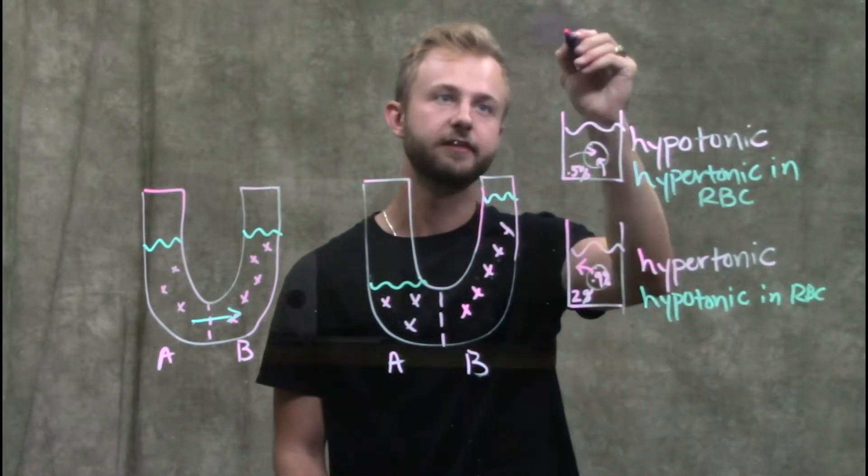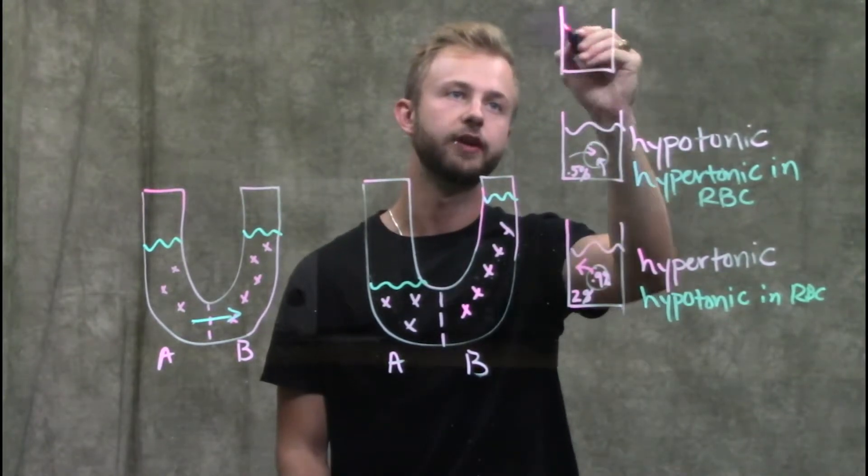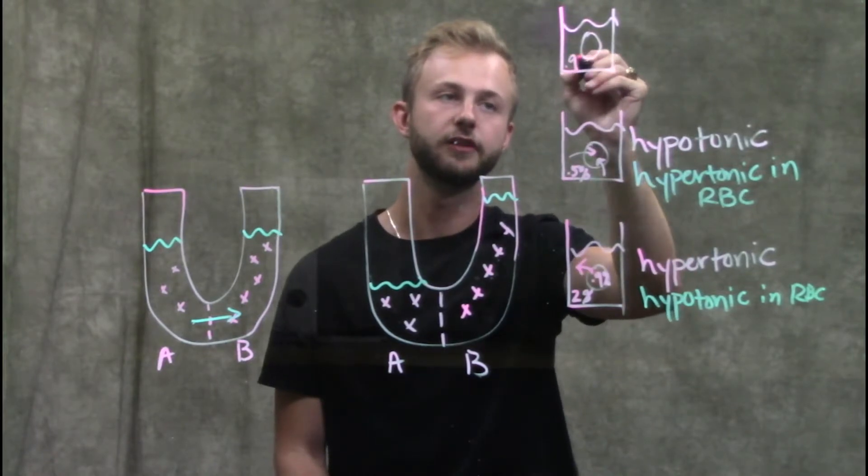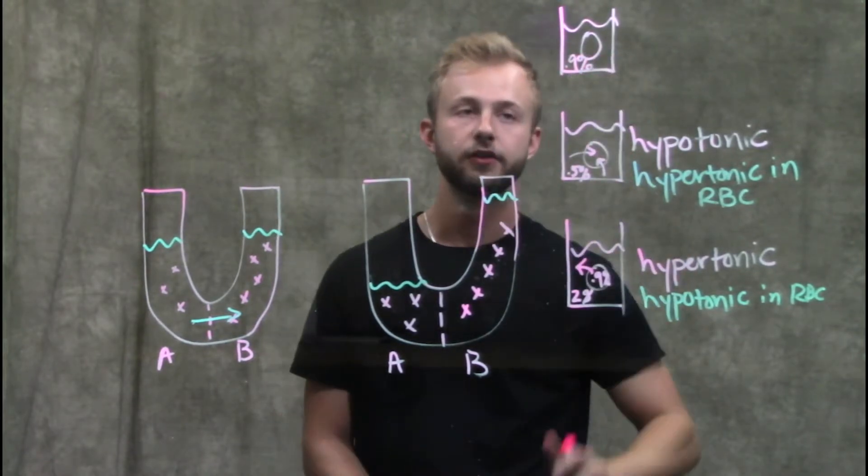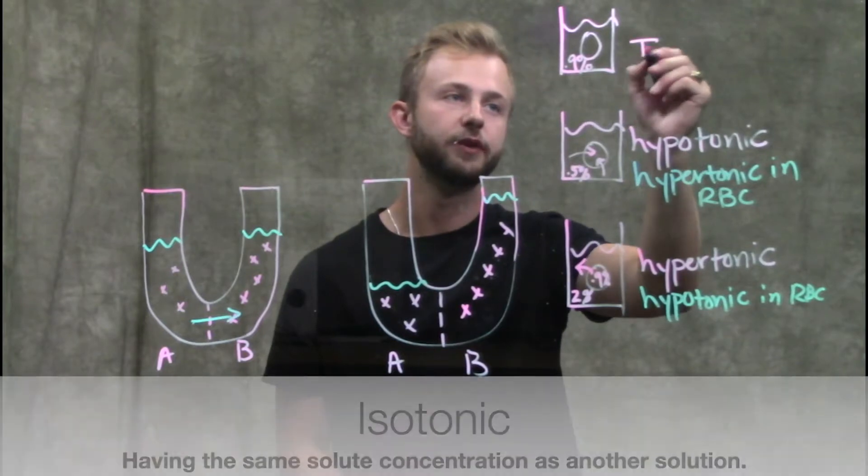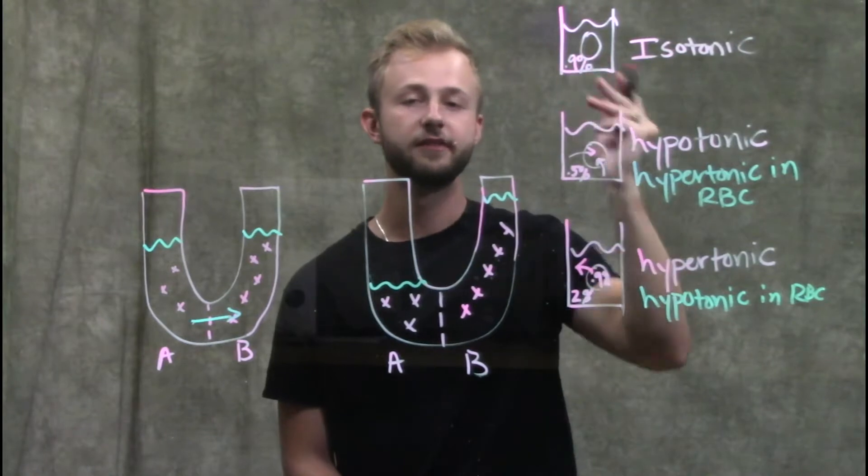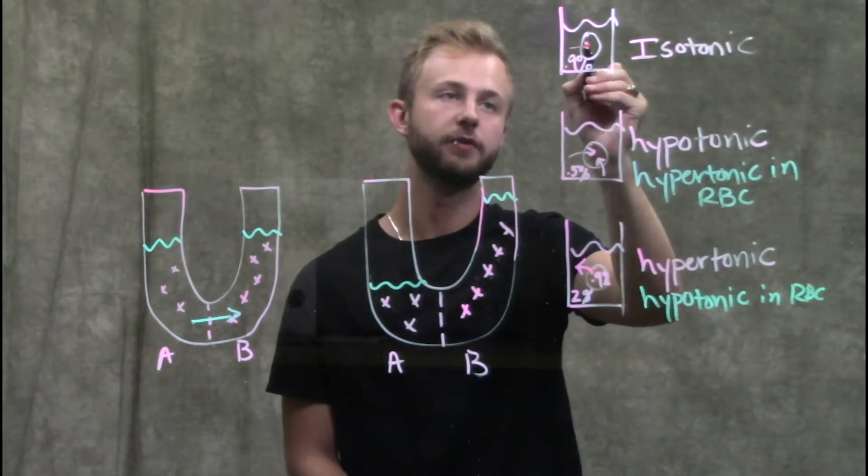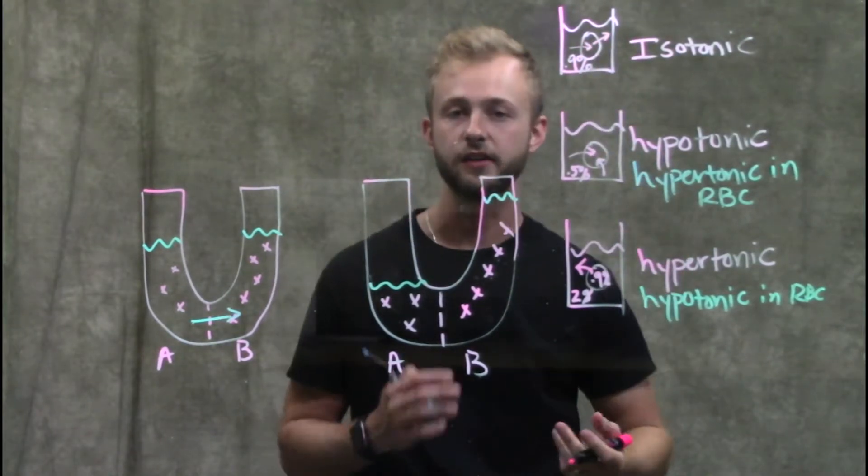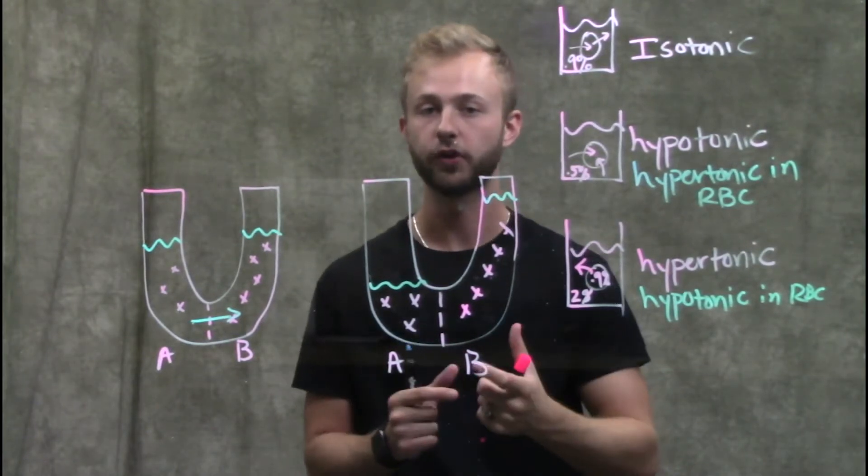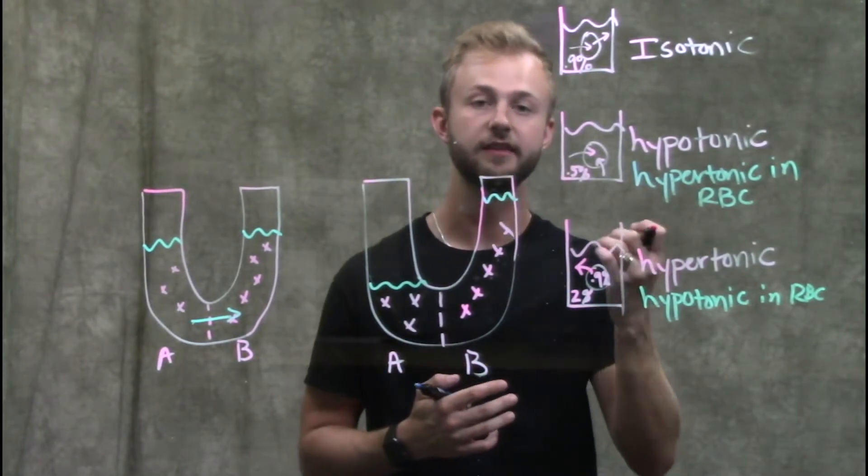Lastly, we'll look at a situation in which the inside of the red blood cell, which is 0.9%, and the solution are the same. In this case, this situation is called isotonic. Nothing is going to happen to the red blood cell. Water will be able to move in and move out at equal rates. The cell won't shrivel and the cell won't burst. It's just going to stay the same size.